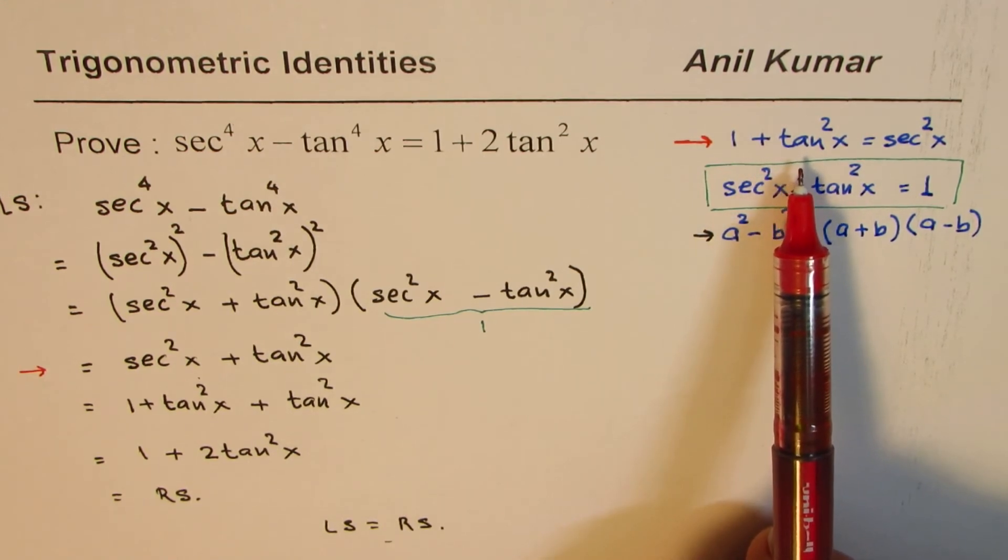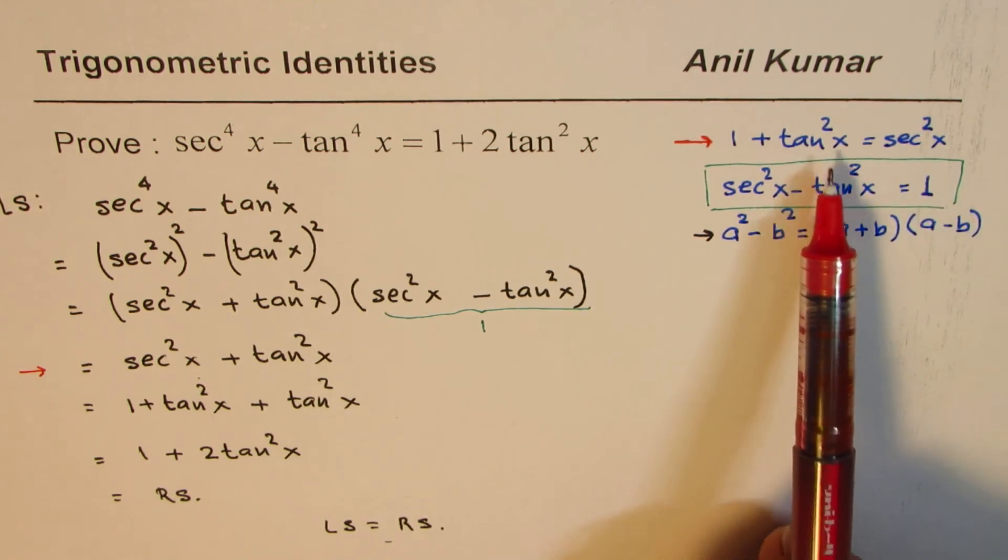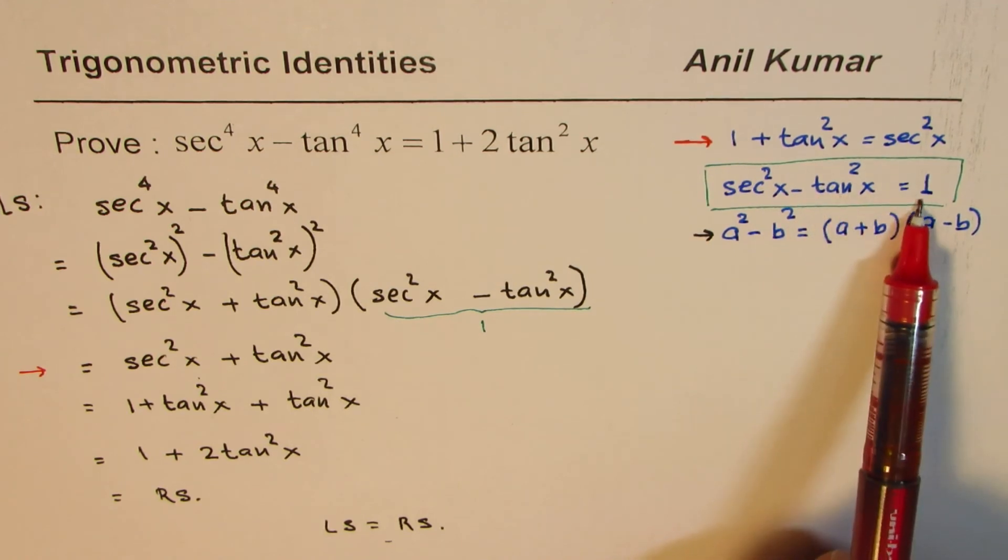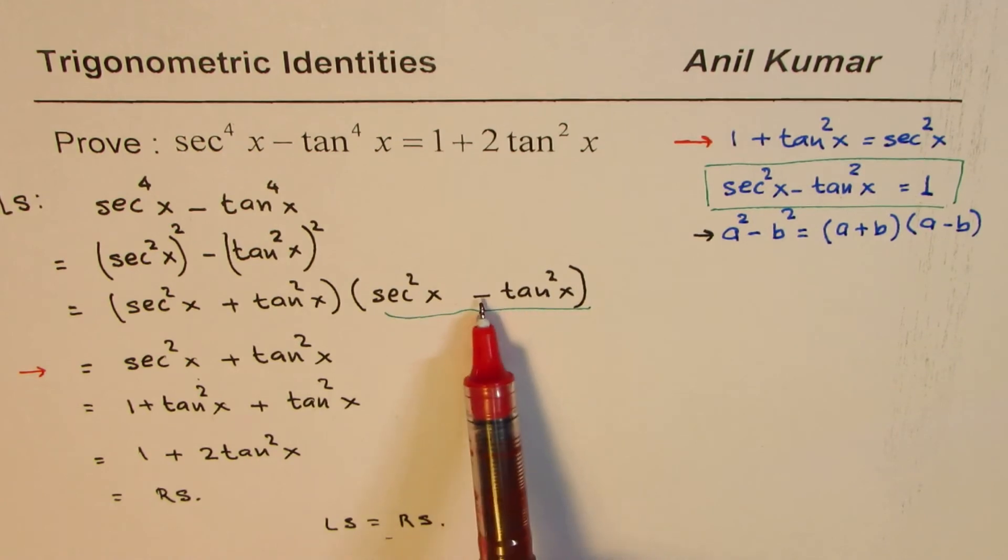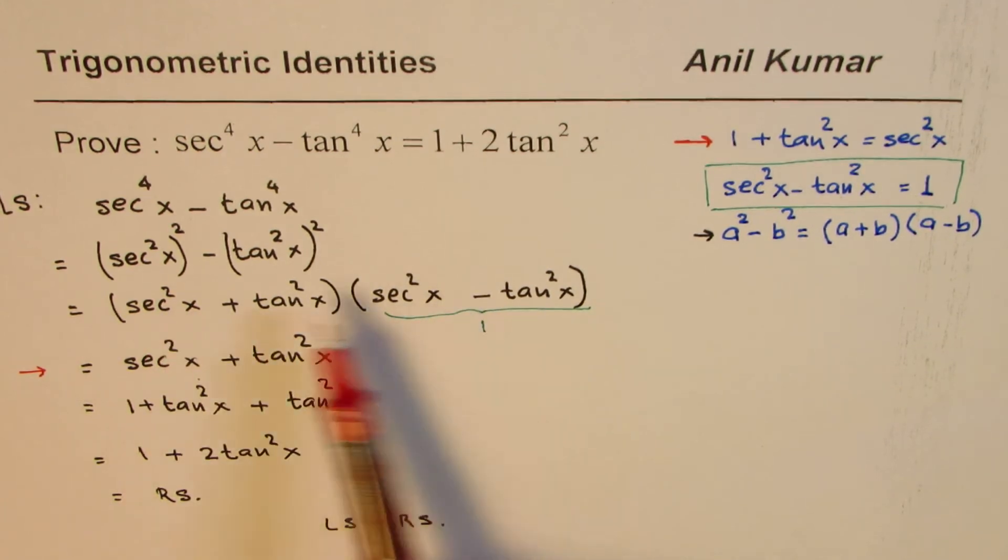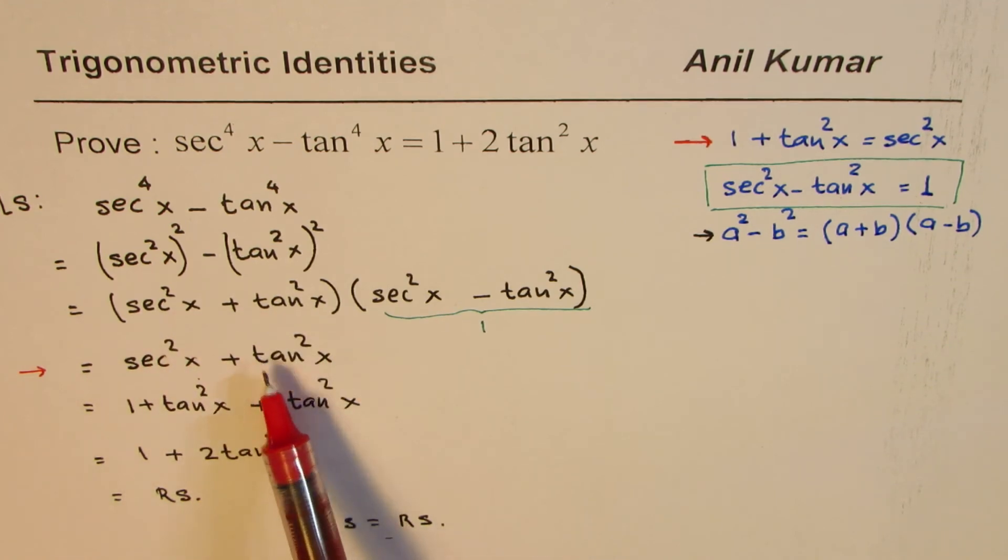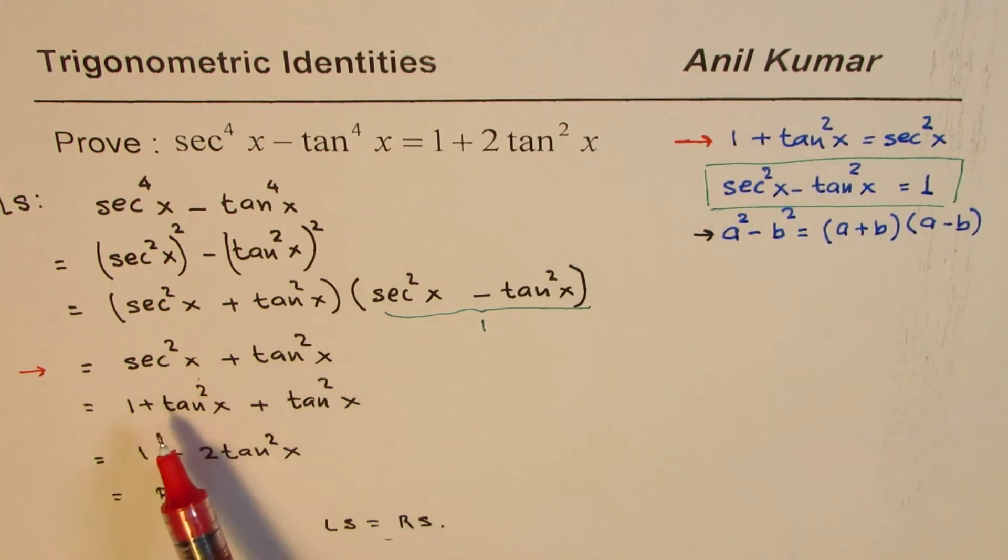Which are Pythagorean identity 1 plus tan square x equals secant square x. Now from here when you rearrange you get secant square x minus tan square x as 1. So I substitute that for secant square x minus tan square x. The expression was simplified to secant square x plus tan square x. Then we use the identity itself replacing secant square x by 1 plus tan square x and then we got the right side.